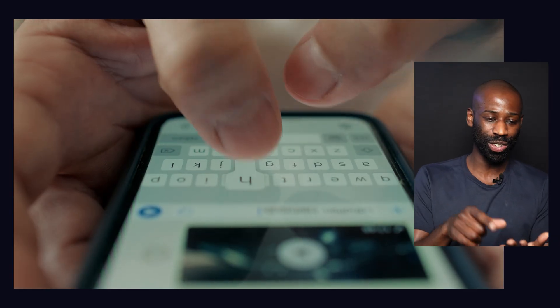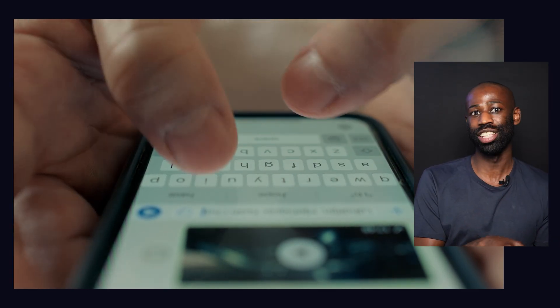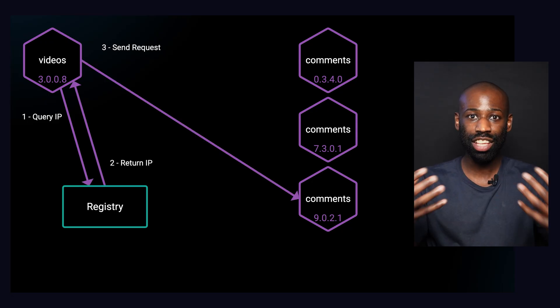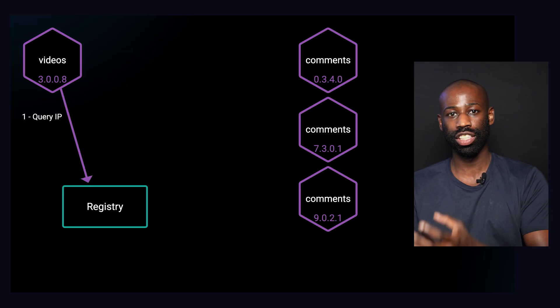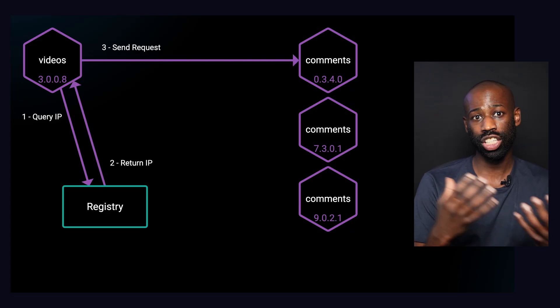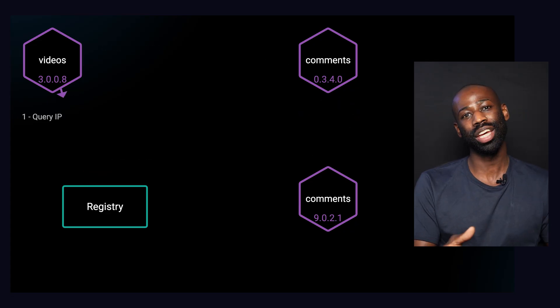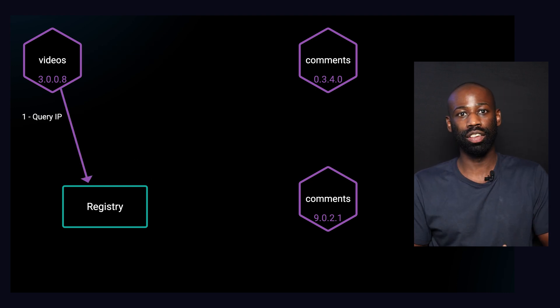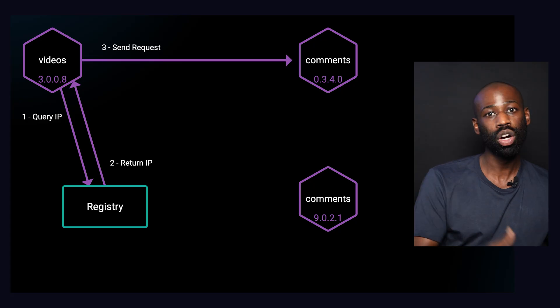There are two strategies to get the address. In the first strategy, the client service gets the address directly from the service registry — it's like you opening your contact list on your phone and trying to find your friend's phone number. This strategy is called client-side discovery. The principle is simple, but it means that each service needs to have some extra logic to get the addresses from the service registry. You might be able to use existing libraries or shared code, but in some cases you might need to implement that logic yourself, or each team might need to implement it differently, especially if they use a different programming language or different frameworks.